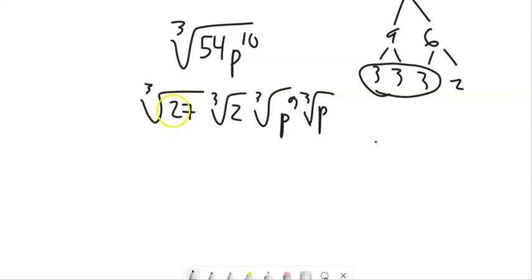And you see what's left. Cube root of 27 is three. Cube root of p to the ninth is p to the third because three times three is nine. And then I still have a 2p left in there.